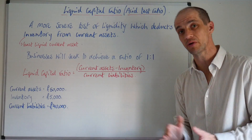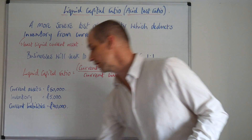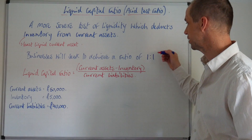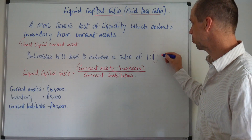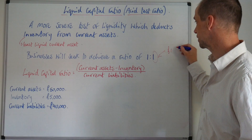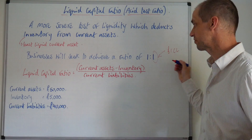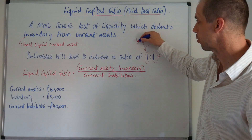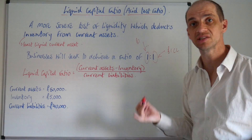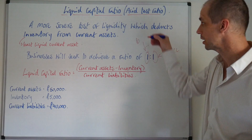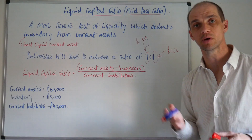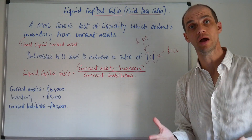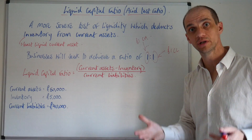Businesses will seek to achieve a ratio of around one to one. That means for every pound of current liabilities, you want to retain at least one pound of current assets minus the inventory. It does require the business to test this on a regular basis to ensure they have sufficient liquidity to repay those short-term debts.